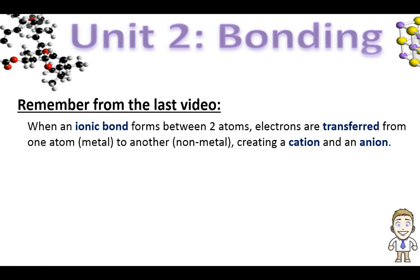What we saw was that when an ionic bond forms between two atoms, electrons are actually transferred from one atom — the metal — to another atom — the nonmetal — creating what we call the cation and anion.